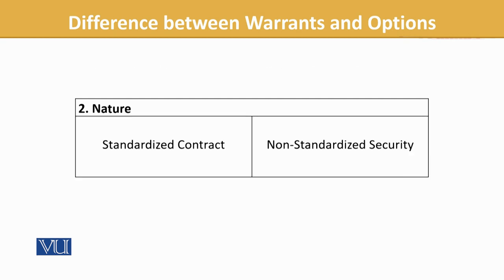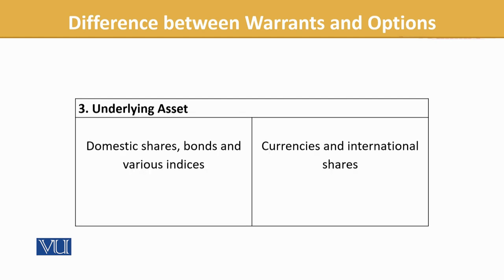So there is a slight difference in their dynamics. Regarding nature — options are very standardized contracts, whereas warrants are not necessarily standardized. We also discussed that warrants largely operate in OTC markets. The underlying assets in options are domestic shares, bonds, and various indices, whereas in warrants, currencies or international shares are also quite common.